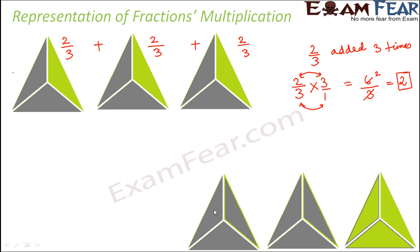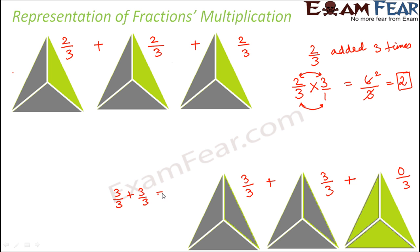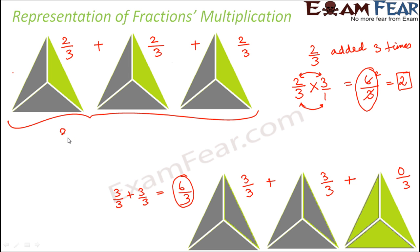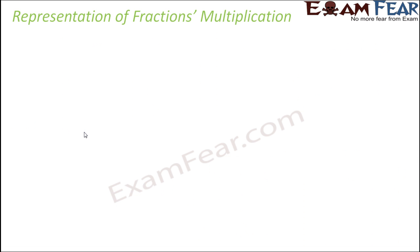The result is shown as follows: in the first two images all three parts are shaded — that's three thirds each — and in the third image zero parts are shaded. Adding three thirds plus three thirds plus zero thirds gives six thirds, which equals 2. So one set of figures represents the fractions being multiplied and the other represents the resulting product.